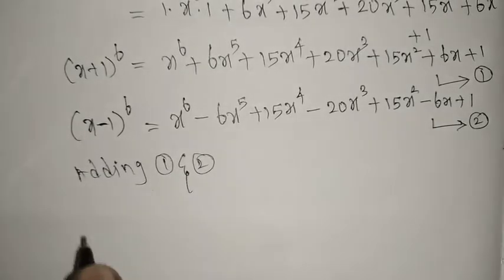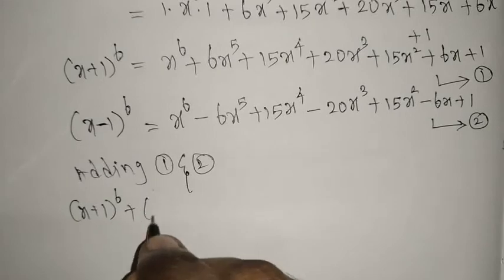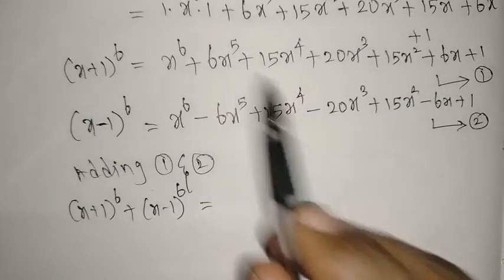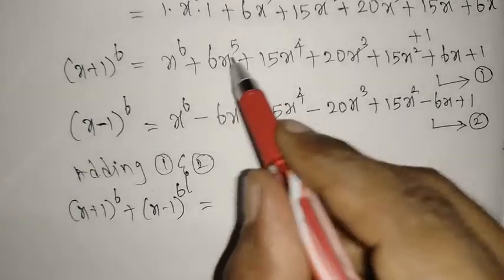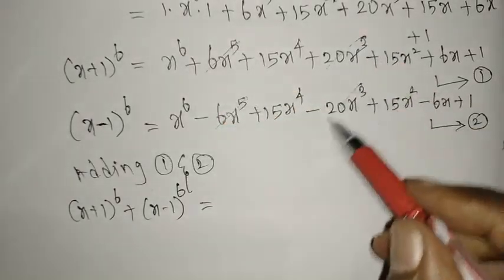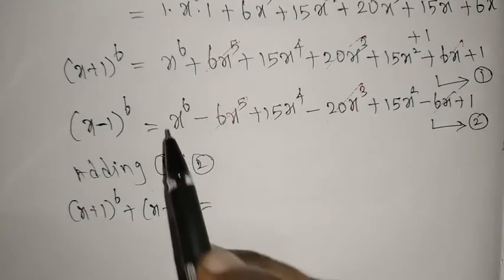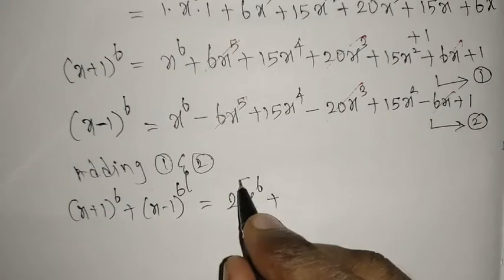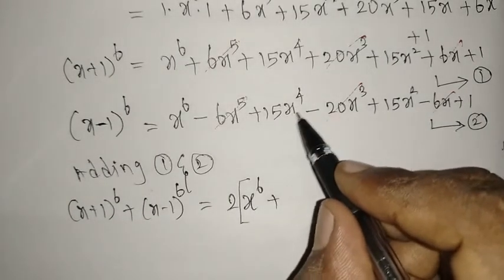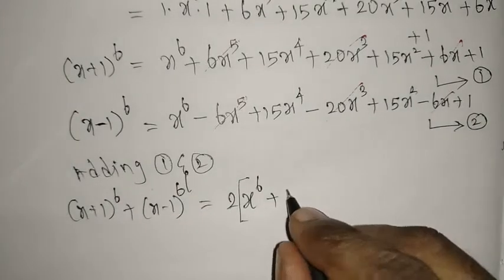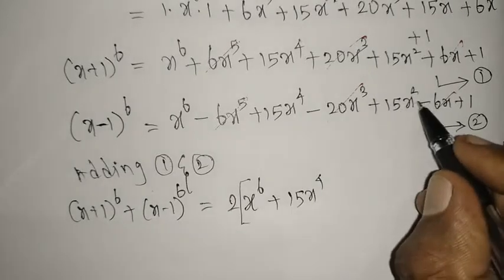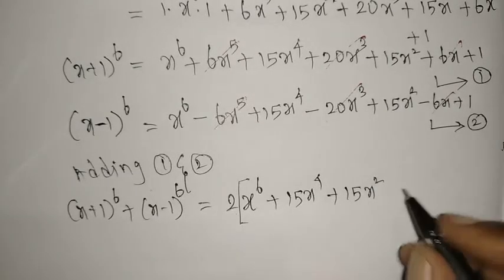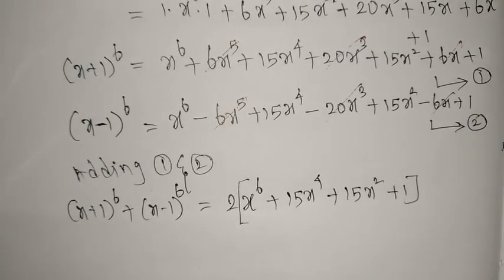Now we add Answer 1 and Answer 2 to find (x+1)⁶ + (x−1)⁶. The terms with odd powers of x cancel (±6x⁵, ±20x³, ±6x), and the even-power terms double. Taking 2 outside: 2(x⁶ + 15x⁴ + 15x² + 1).